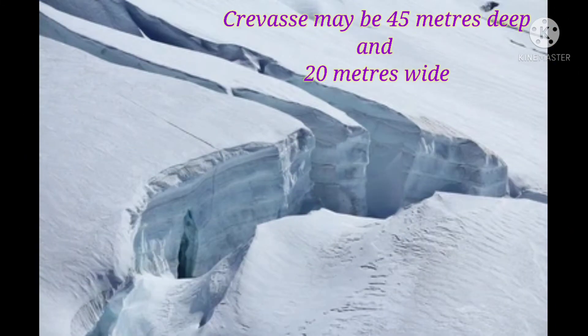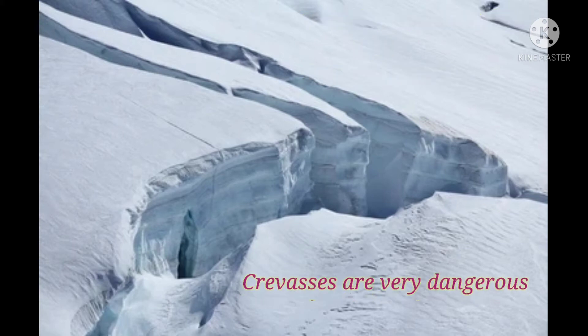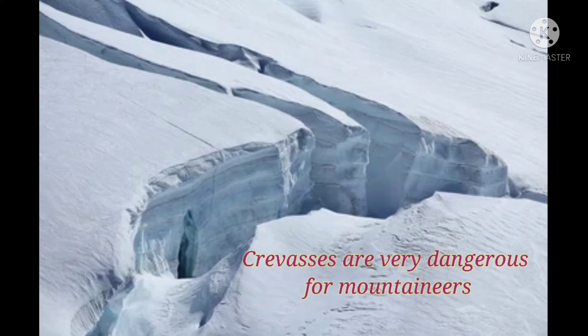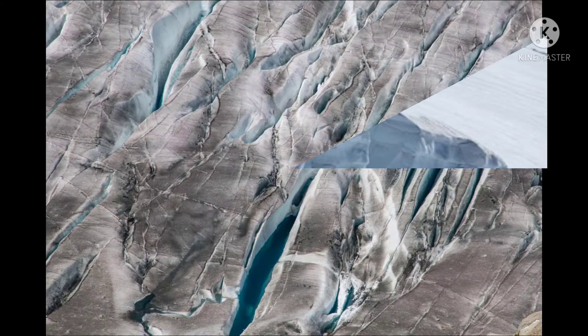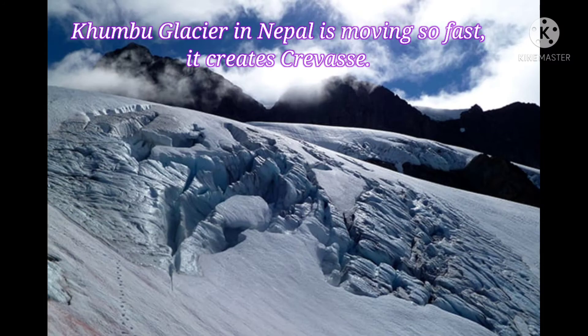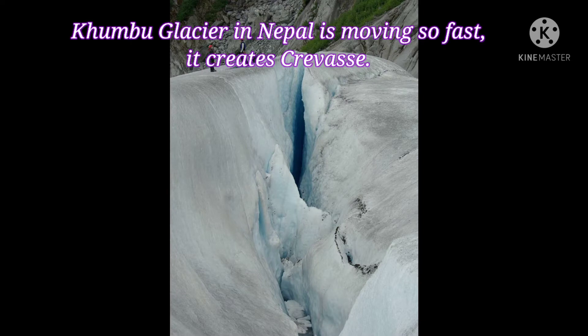Crevasses may be 45 meters deep and 20 meters wide. They may be covered by a thin layer of snow which cannot hold a person's weight, so crevasses are dangerous for mountaineers or climbers. On the southern slope of Mount Everest in Nepal there is a large glacier named Khumbu Glacier, which is moving very fast. As a result, crevasses open quickly, which is the most dangerous obstacle for mountaineers or climbers.